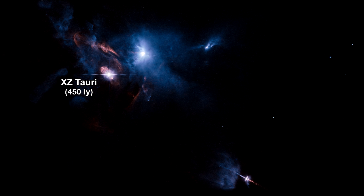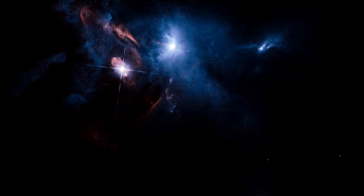Here's a view of a multiple star system called XZ Tauri. Its neighbor HL Tauri and V1213 Tauri, just 450 light years away. These young stellar objects are illuminating the entire region.